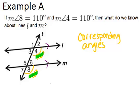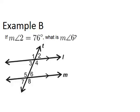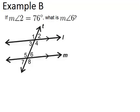So what we know is that L is parallel to M. Alright, let's go on to example B, which says if the measure of angle 2 equals 76 degrees, so again, let's mark that in.